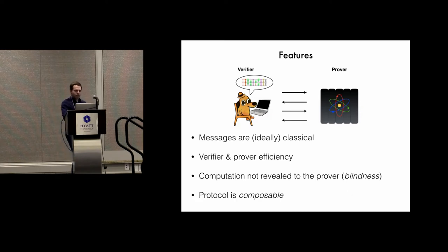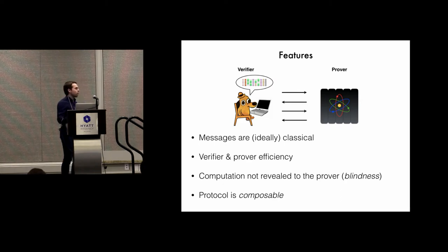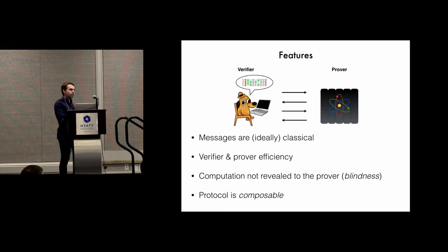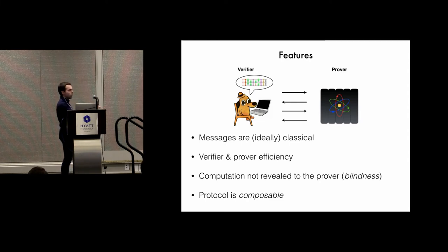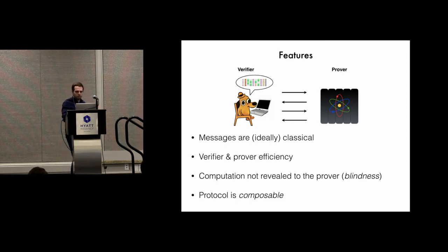Lastly, a property that we want, especially when we have certain cryptographic elements, is known as composability. This just says that we can use this protocol as a black box and be able to compose it with other protocols — take the output of some other protocol and plug it into this one, or plug the output of this one into another one.